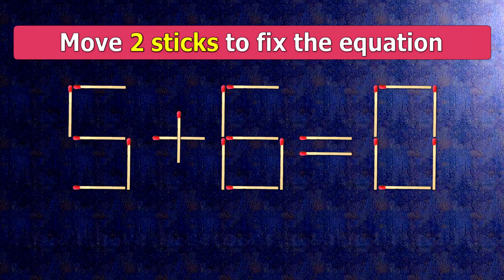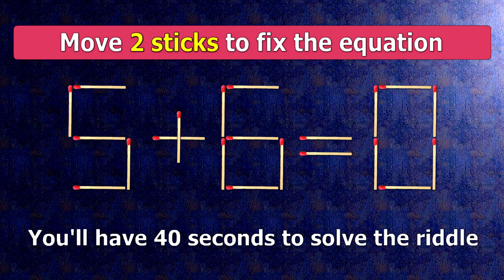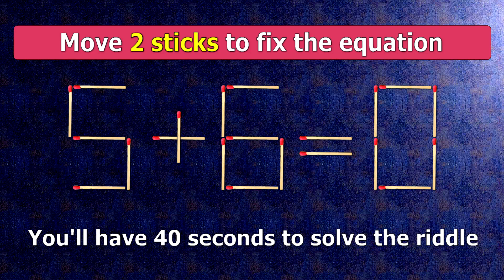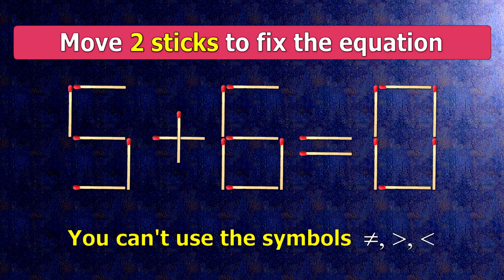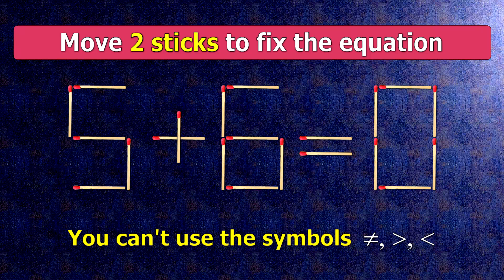We have the equality 5 plus 6 equals 0. Our equality is wrong. We need to move two matches to make our equality correct.